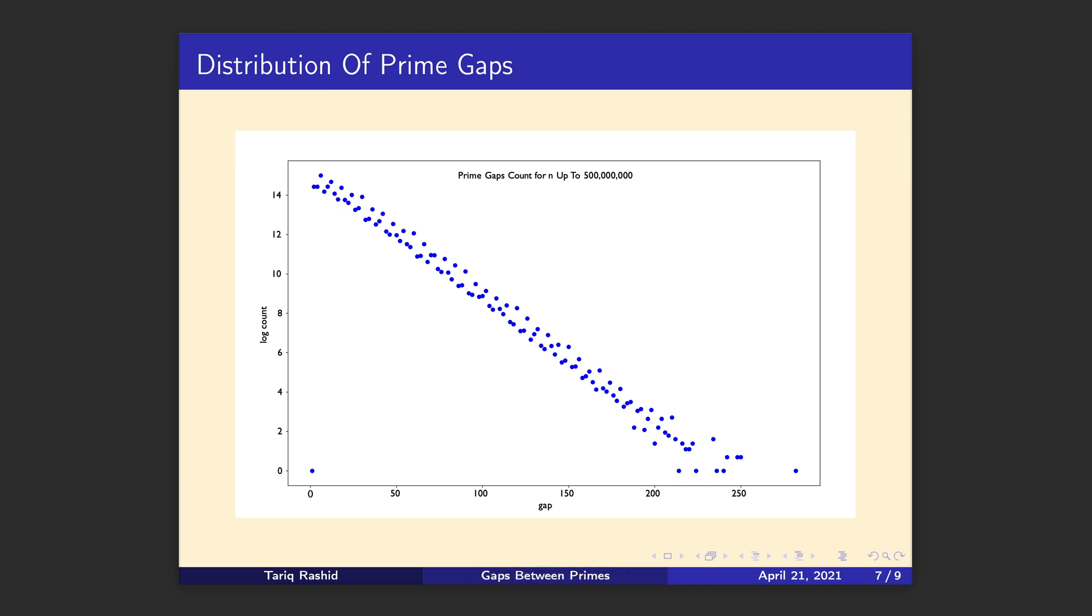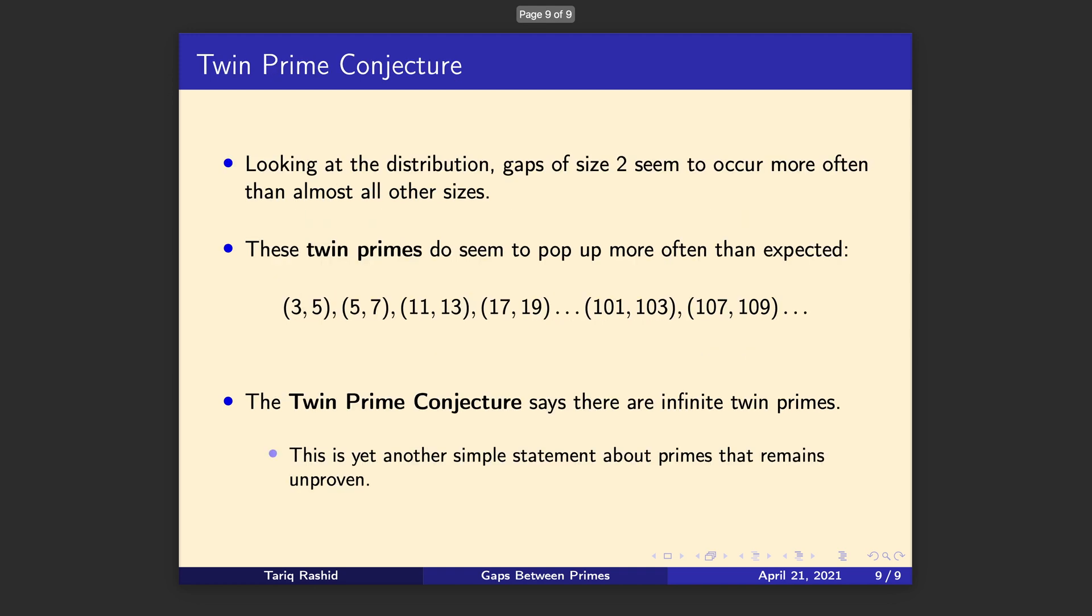So we can ask, well, how often does a gap of 2 occur? And if you've just even in passing looked at primes, you'll have noticed that the twins seem to pop up. We've seen 3 and 5, 5 and 7, 11 and 13, and so on. And that doesn't stop. That doesn't dwindle out. That doesn't fizzle out and fade away. Even further along the number line, you'll see twin primes that differ just by 2.